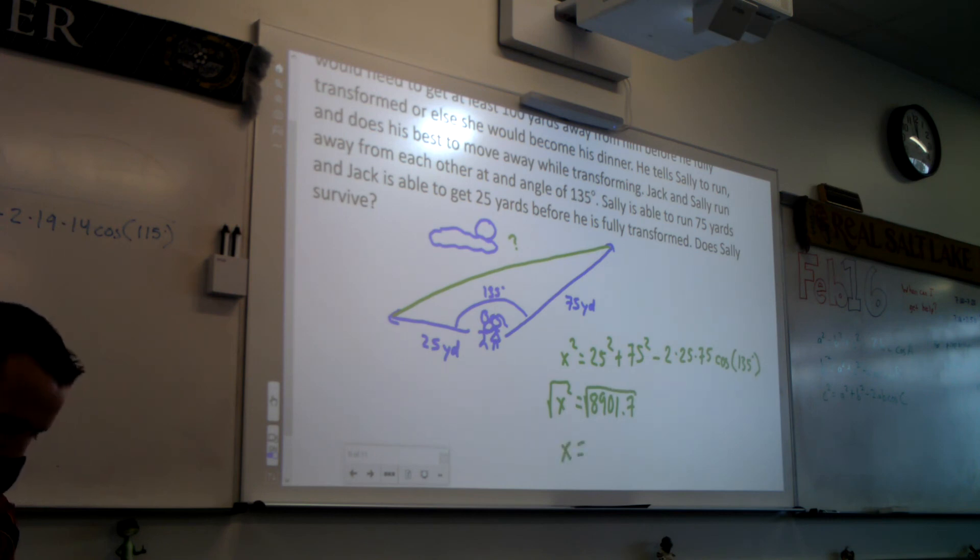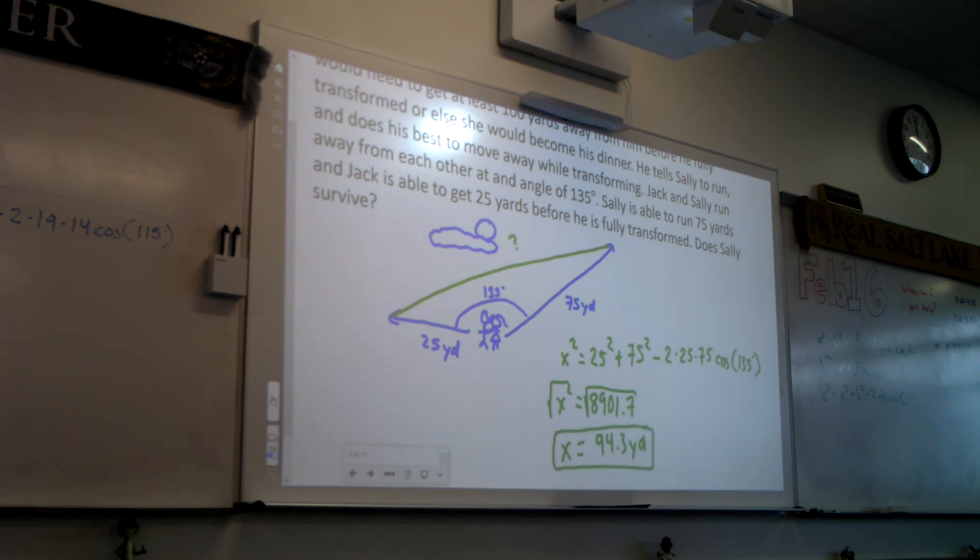What do you get when you square root that? 94. So what happened? She died? No, twist in the story - she carried something with her to protect her, a gun. So Jack died. Or maybe she had a time turner just like in Harry Potter 3 and she howled in the distance and distracted the wolf. All is well that ends well. This is how you would use the law of cosines. Any questions?